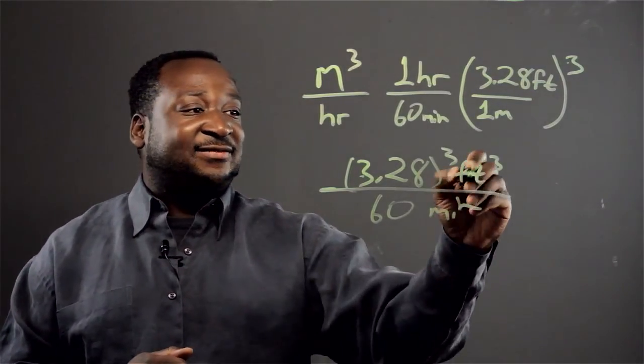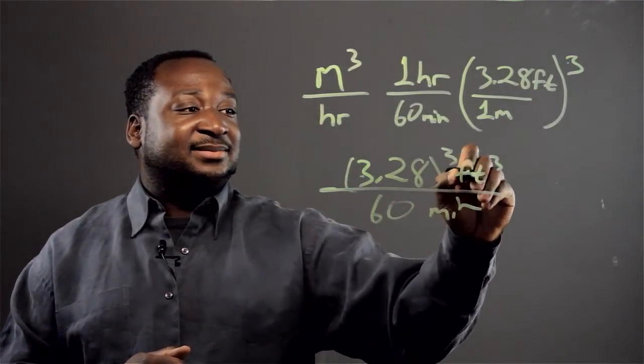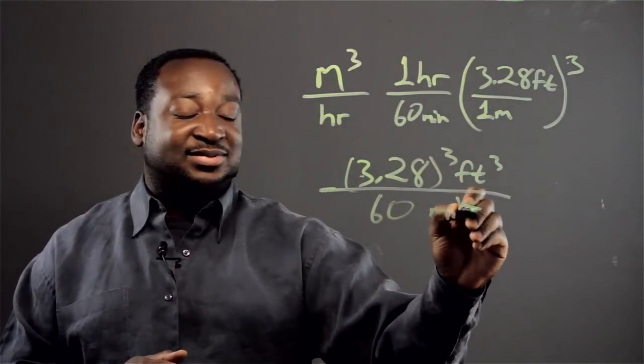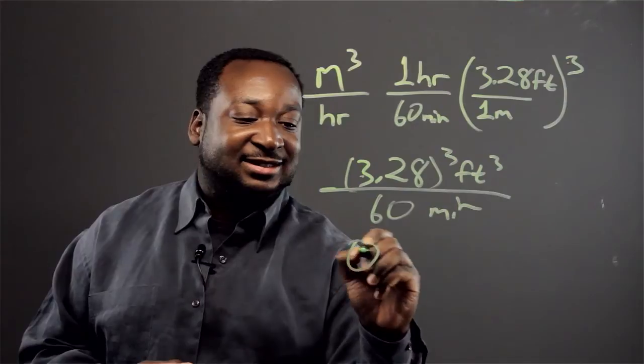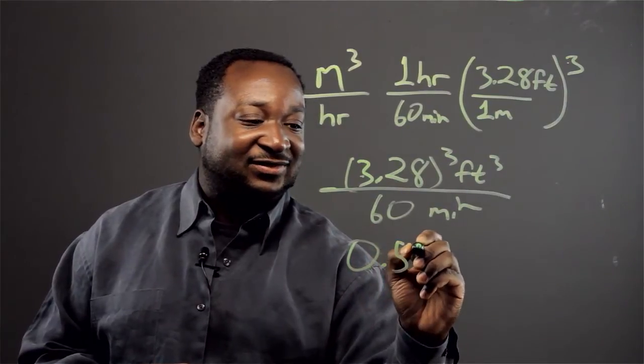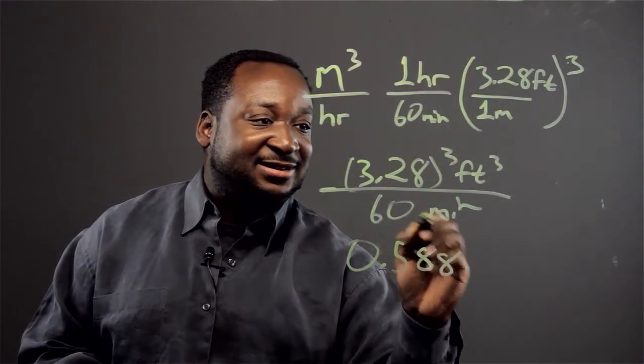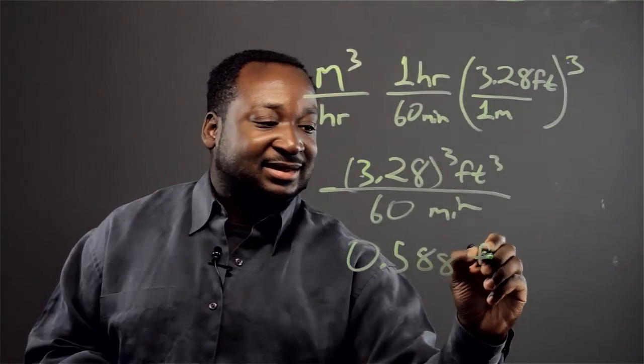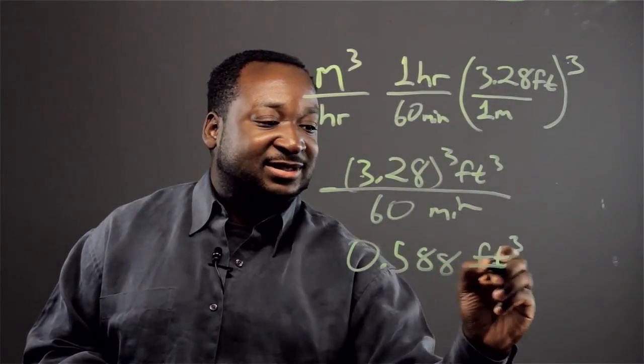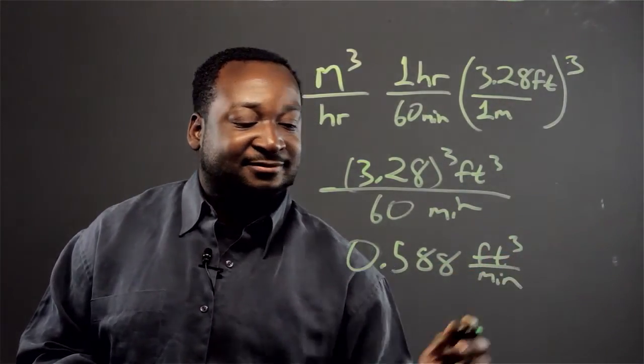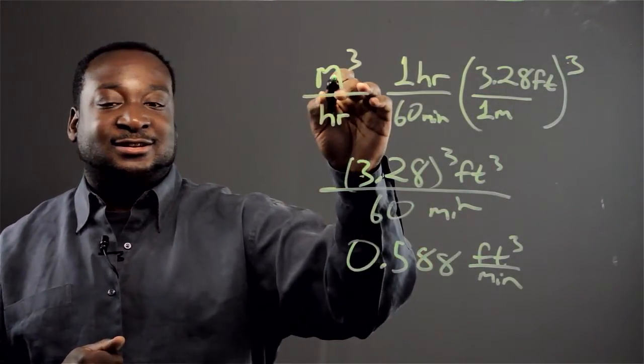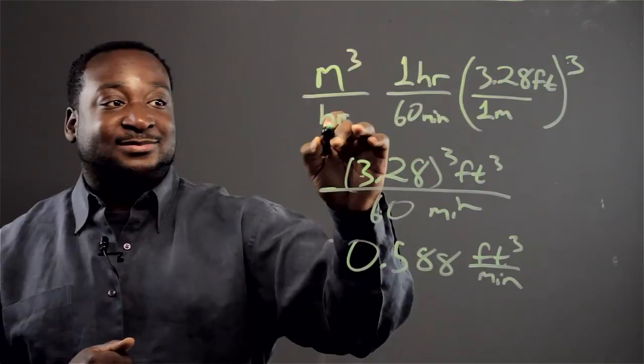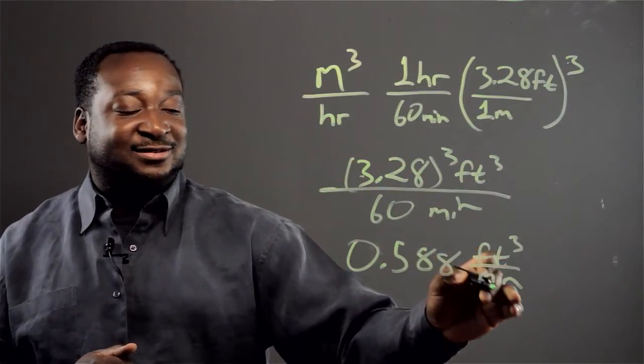Now you have cubic feet per minute. This number here is equivalent to 0.588 feet cubed per minute. And that's how you convert from cubic meters per hour to cubic feet per minute.